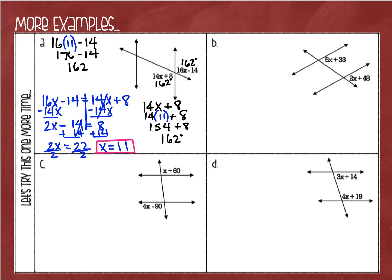This would be a great time to stop the video and see if you can do these other problems on your own. If you don't feel comfortable doing that, just keep watching. For question b, I've got 5x plus 33 and 2x plus 48. These are corresponding angles — if I took this parallel line and slid it on top of the other, these two would be right on top of each other. Corresponding angles are equal: 5x plus 33 equals 2x plus 48.